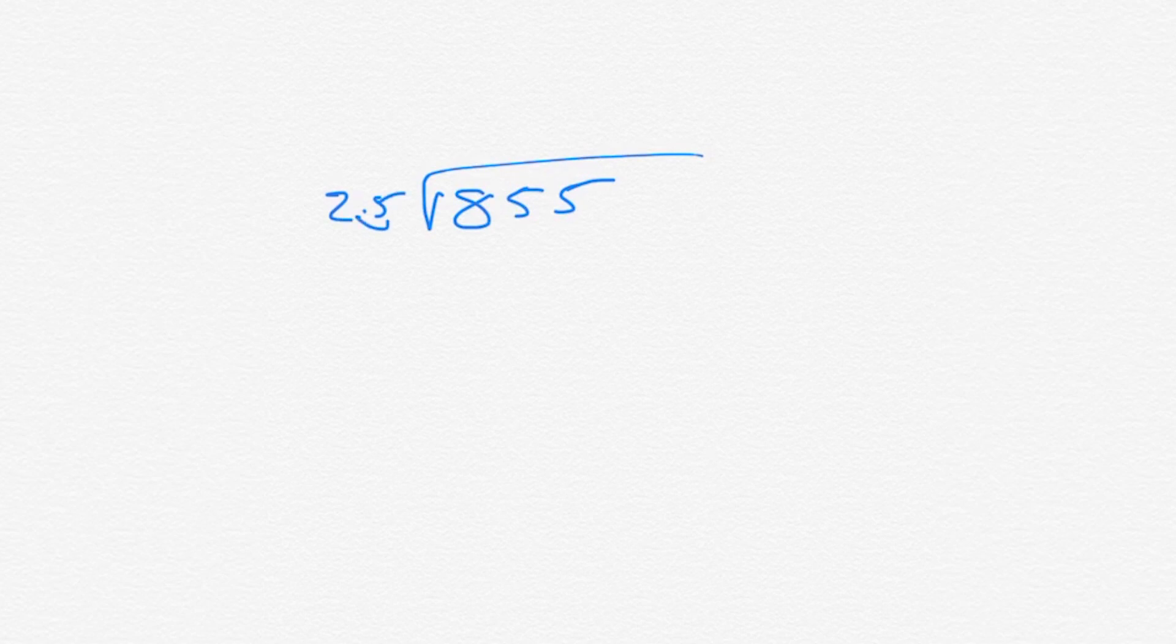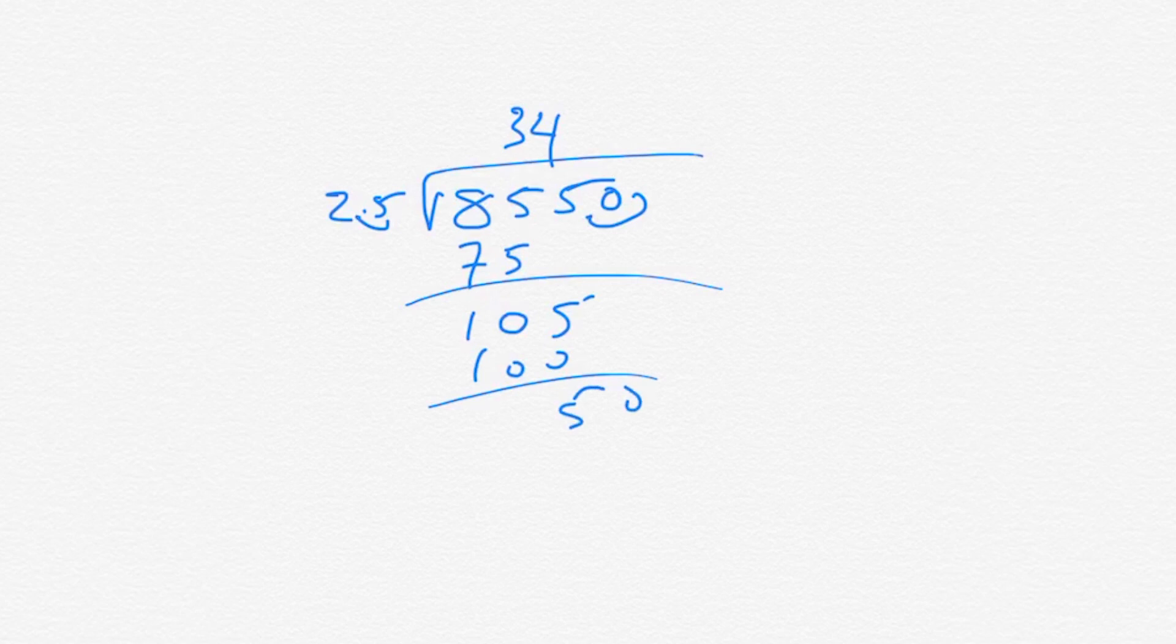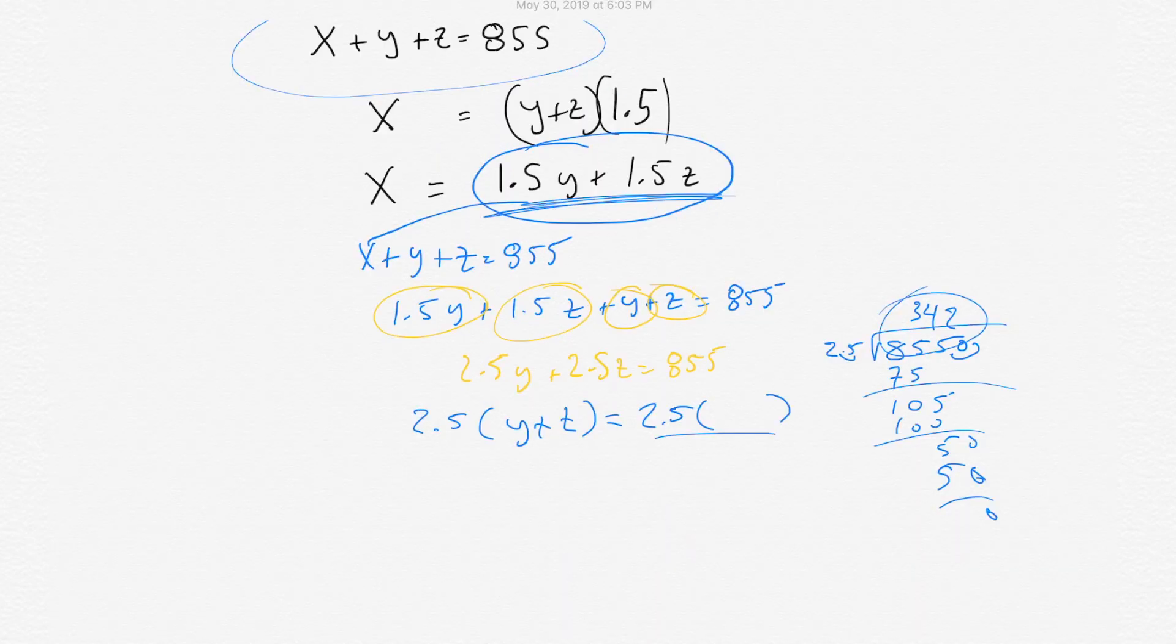All right. At this point, I'd probably just go like that. Okay. So you have 25 goes into 85 three times. All right. Good old long division. And then 25 goes into 105 four times. You get 50. And then 25 goes into 50 twice. Yeah. Perfect. Okay. So it's 352.